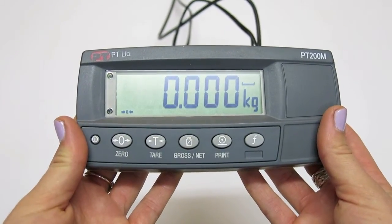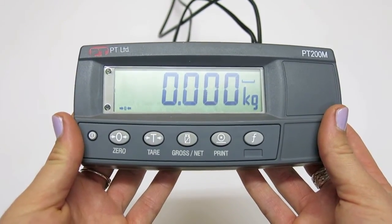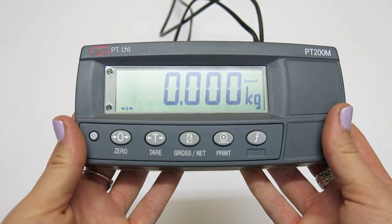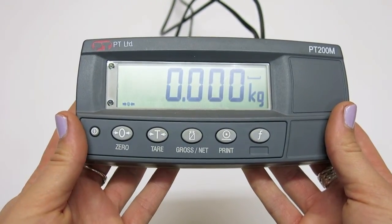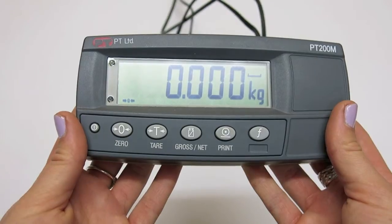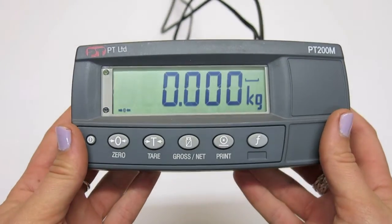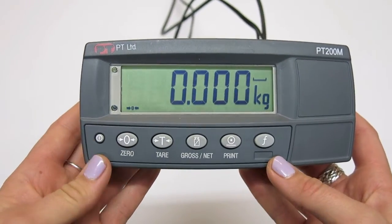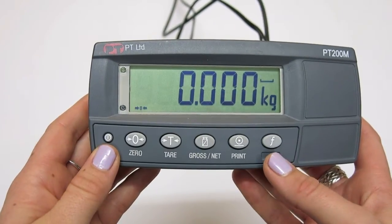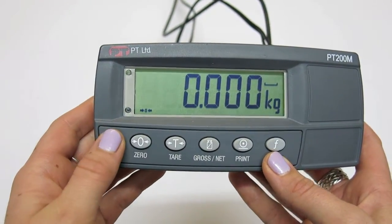There are two main types of calibration on the PT200M: regular and direct. Both types can be found in the calibration menu which is under the main setup menu. To get to this main setup menu, press and hold the power and function buttons together.